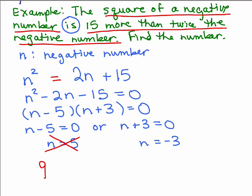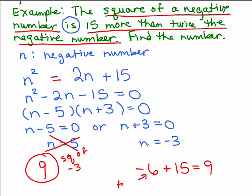Well, twice the negative number, if the number's negative 3, twice it would be negative 6, right? And 15 more than that would be 9. So I'm sort of like reading the problem. It's saying, is the square of the negative number, which is over here, that's the square of the negative number, the square of negative 3, basically. And this is 15 more than twice the negative number. So that's twice the negative number.